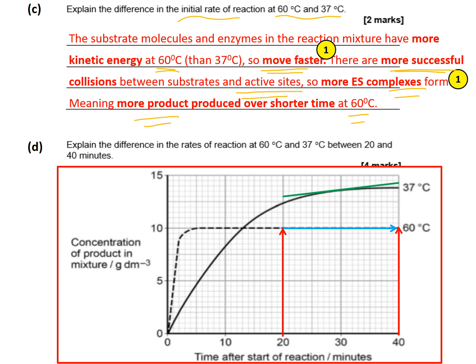You can actually work out the reaction rate between 20 and 40 minutes by looking at the increase in product in grams per decimetre cubed from 20 up to 40 minutes. That's over a 20-minute period, and dividing by 20 gives you the rate per minute.